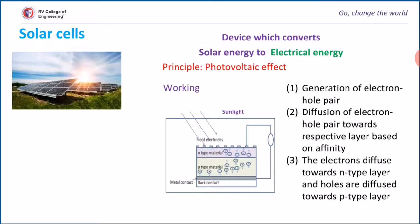This electron-hole pair diffuses towards the respective layer based on their affinity. The electrons diffuse towards the n-type layer, whereas holes diffuse towards the p-type layer. These layers are connected externally through a circuit, hence current is generated. This cycle is repeated whenever sunlight falls on the n-type material.